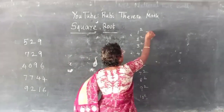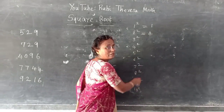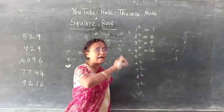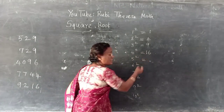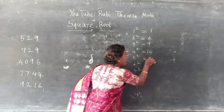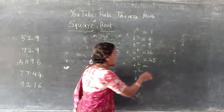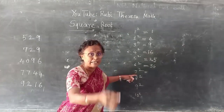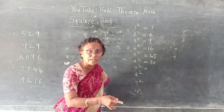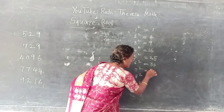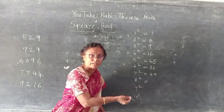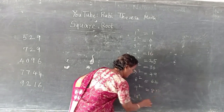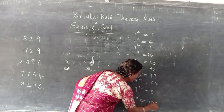You should be very thorough with these squares. 1 square is 1. 2 square is 4. 3 square is 9. 4 square is 16. If you are unable to say the answer directly, just say 4 fours are 16. 5 square: 5 fives are 25. 6 square: 6 sixes are 36. 7 square is nothing but 7 into 7, so 7 sevens are 49. 8 square: 8 eights are 64. 9 square: 9 nines are 81. 10 square is 100.